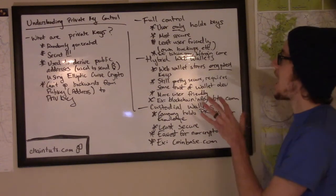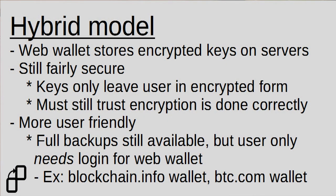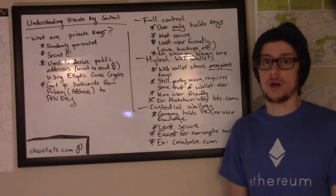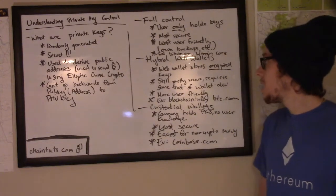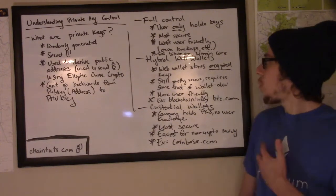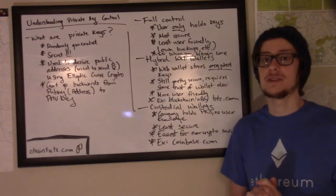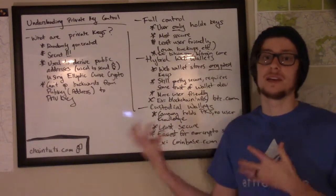The second model is hybrid web wallets. These are wallets like the ones found at blockchain.info or btc.com. With these wallets you log on to a website which only has access to encrypted private keys stored on their servers. The website or the developer of the web wallet doesn't know what your private keys are, but they keep an encrypted backup safe for you. This is still pretty secure, but requires some trust of the web wallet developer — you have to trust that the company doesn't have any back doors on their software that would give them your encryption passphrase or somehow send unencrypted private keys to their servers.